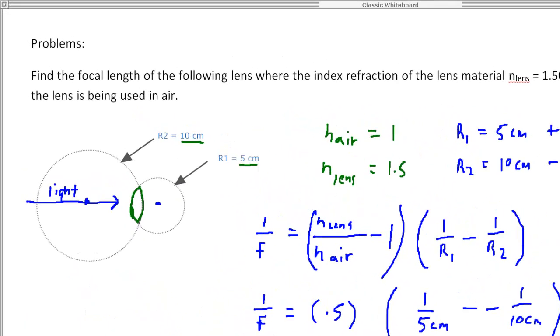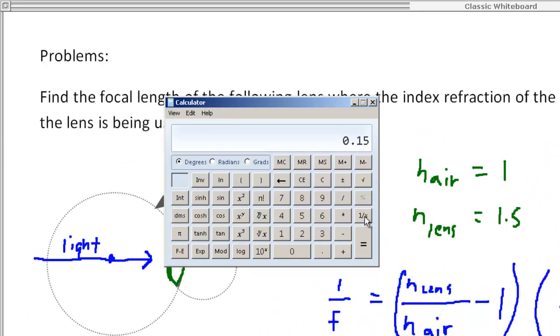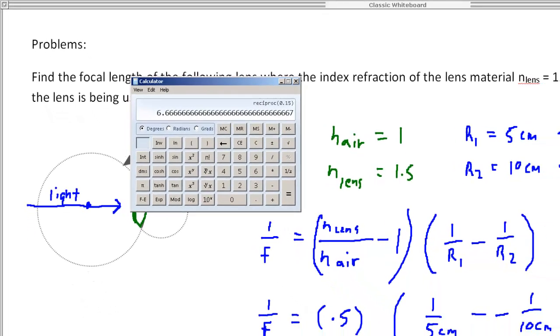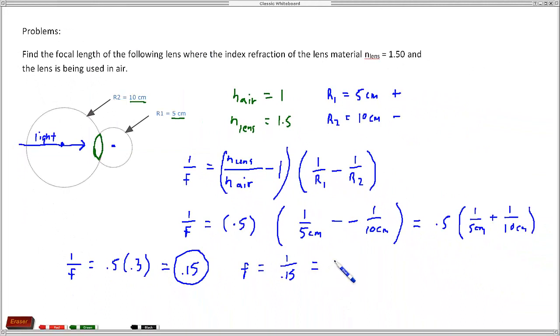So if we go back to our calculator answer there and take the reciprocal of that, that gives us 6.67, and remember our units are centimeters for this particular problem. So this is the answer we're looking for: f equals 6.67 centimeters.